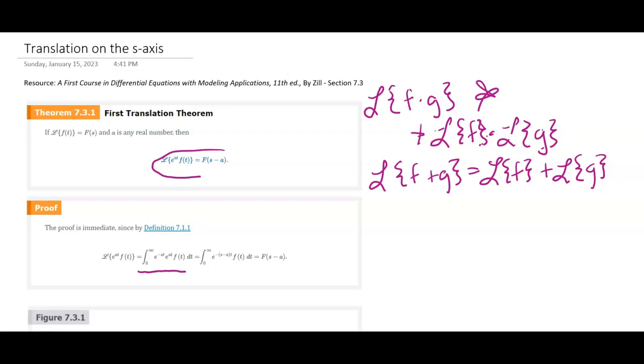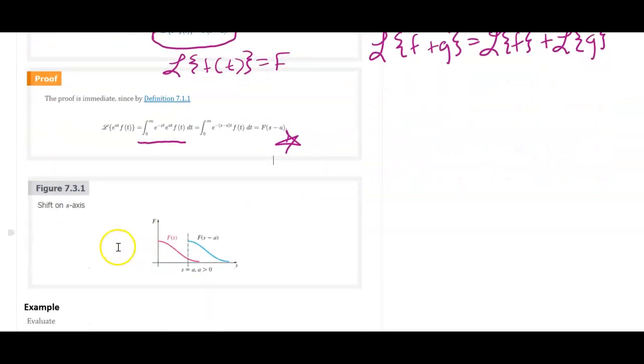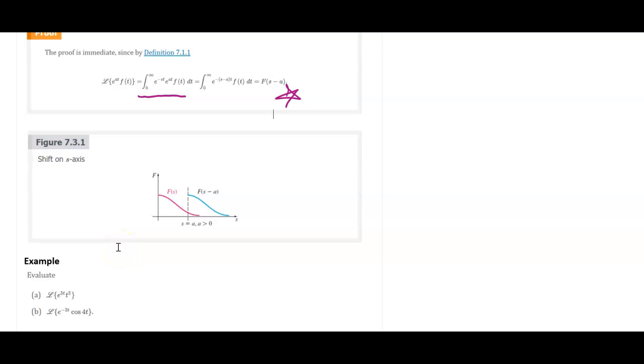So it is true that if you have an e to the at function in front of F of t, then you can just take big F, so F being the Laplace of little f of t. You can just take big F and then plug in s minus a, and you can see why that's the case here with our formula and our definition. Essentially what we're doing is we're just moving F of s over to s minus a because we have that e to the at here that we are using.